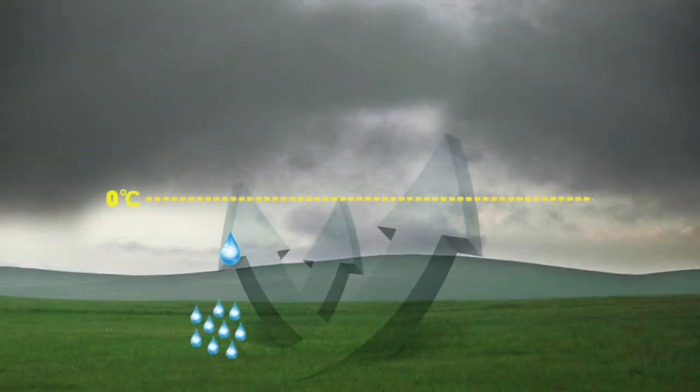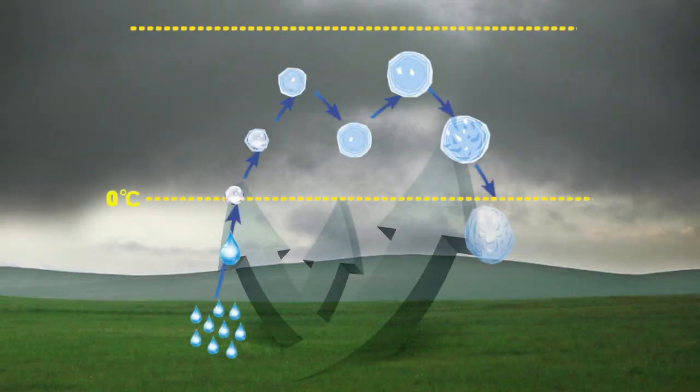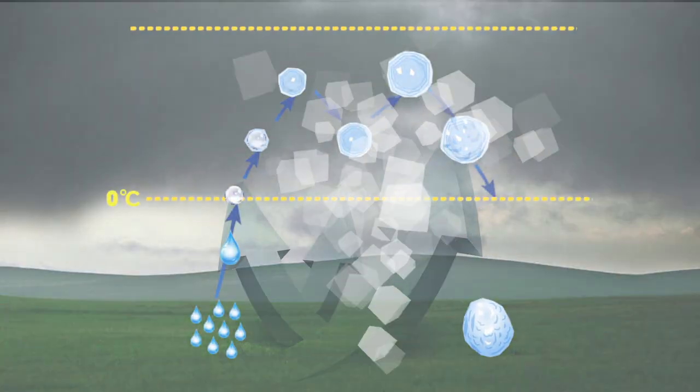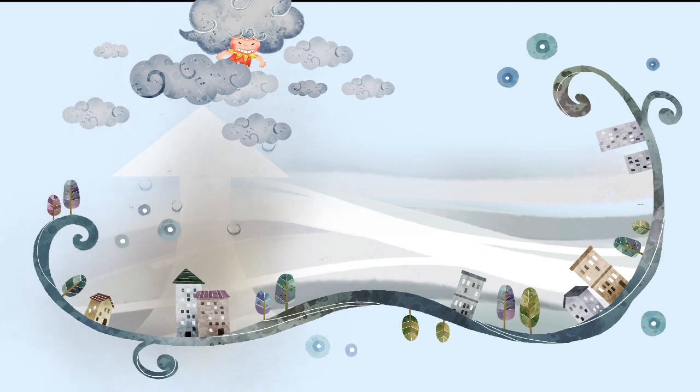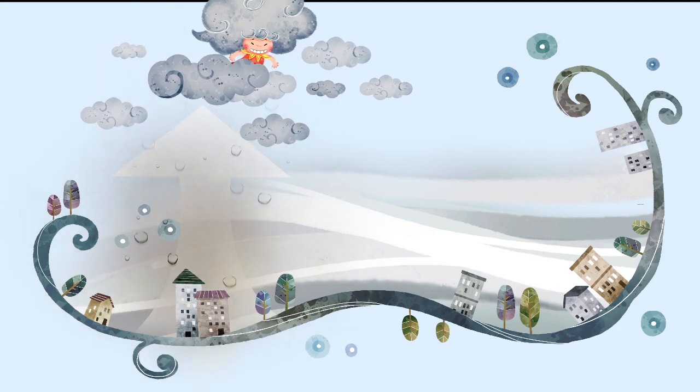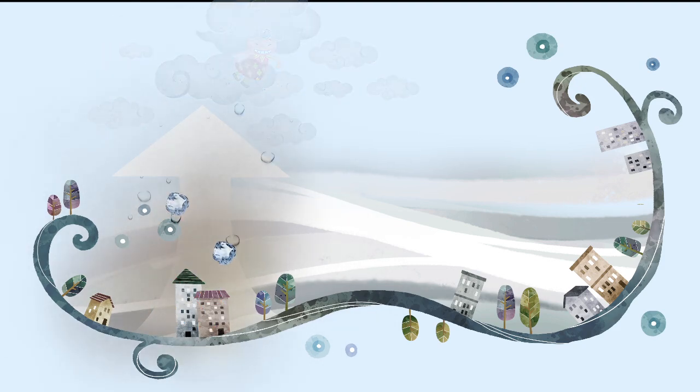Hail is formed through two processes which create layers within the hailstone. Strong updrafts, which are rising streams of air, in some thunderstorms push rain and ice pellets high into a thunderstorm, keeping them suspended within the storm.